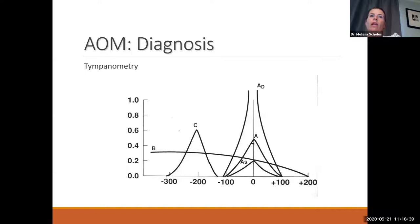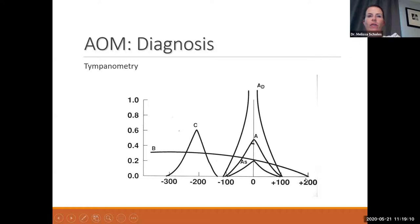Tympanometry: in a normal eardrum we should see a nice Type A peak. Type As is a shallow peak — usually a stiff eardrum. Type Ad is a very loose eardrum, typically thin from infections or multiple sets of tubes. Type C is a retracted eardrum with some movement but negative pressure. Type B is a flat tympanogram — there's fluid and no movement of the eardrum — which is used for diagnosis of ear effusions. This is common in pediatrician offices that may not be comfortable with pneumatic otoscopy.